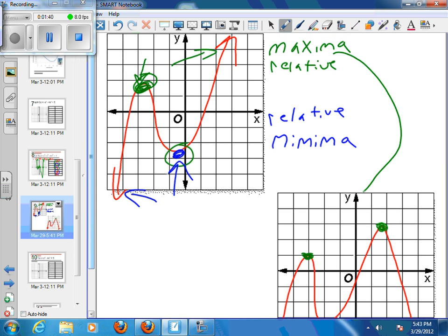These would be our relative maxima, because at a certain area, they are the maximum point the graph gets to. Not necessarily the maximum forever. In this case, our second one is our maximum for the whole graph.